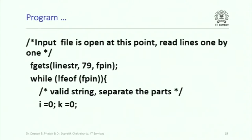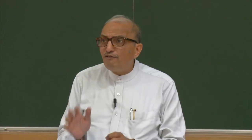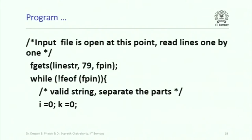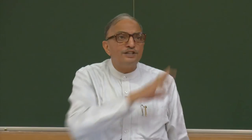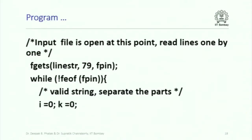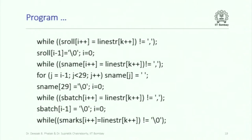Look at the while loop: while (!feof(fpin)). feof is a function call which returns the status of the file whose pointer is passed as a parameter. feof(fpin) means: at this juncture, has the file ended? Has the end-of-file flag been set? If so, the operating system returns true; otherwise false. So not-false is true, meaning as long as end-of-file is not set, keep repeating. I have received a valid string, so I separate the four parts and extract relevant values using sscanf with format specifiers.